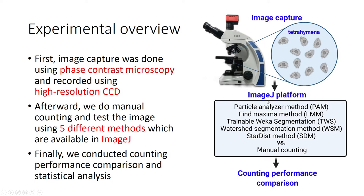We will do the segmentation and counting of the cells in MSJ Platform using five different methods: the Particle Analyzer Method (PAM), Find Maxima Method (FMM), Trainable Weka Segmentation (TWS), Watershed Segmentation Method (WSM), and StarDist Method (SDM). We will compare it to the manual counting result using QPath, which I will present in the next slides.